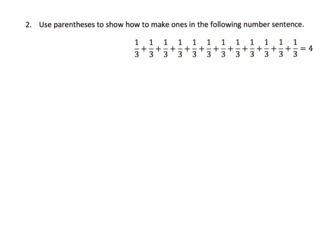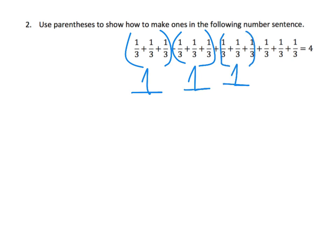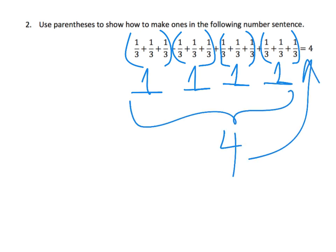What Eureka wants us to do here is understand that we're looking for whole numbers. Because the denominator is three, we need three-thirds to create one whole. So there's one whole — three-thirds equals a whole, three-thirds equals a whole, three-thirds equals a whole — and that's how we get four.